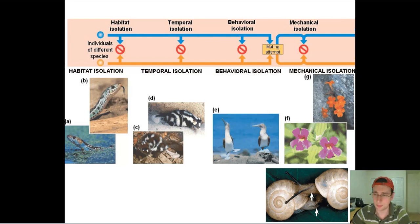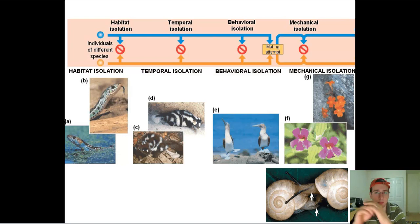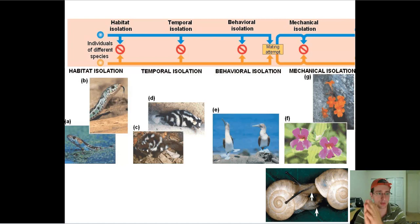Another type is called temporal isolation, and that's when organisms are going to be mating at different times and therefore are not going to be able to mate. We call this a variation in the circadian rhythm or even the annual rhythm of the animals, which will actually cause them to be incapable of crossing with each other.